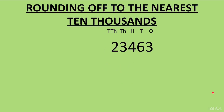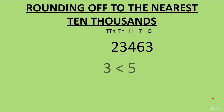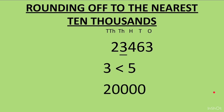Rounding off to the nearest ten-thousands: the example is 23463. We look at the digit at thousands place, which is 3. Since 3 is less than 5, the 2 at ten-thousands place stays as 2. All digits to the right — 3, 4, 6, 3 — become 0. So 23463 rounds off to 20000.